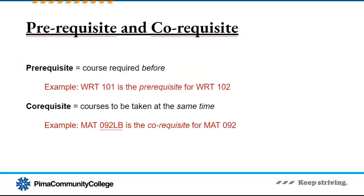Other important terminology to know and understand are prerequisites and corequisites. A prerequisite is a course that is required before you can move forward with another class — for example, you need to complete Writing 101 in order to move forward with Writing 102. A corequisite is a class that you are required to take concurrently with another class; in other words, the classes have to be taken together. For example, you need to take Math 92 and Math 92 Lab together.